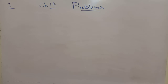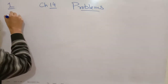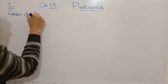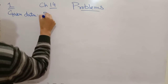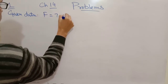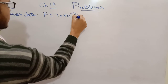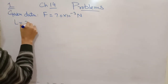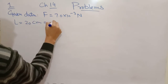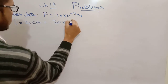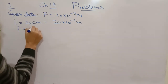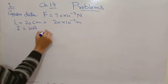We have to find the magnetic field. Given data: Force is 7.0×10⁻³ newtons. Length is 20 cm, which is 20×10⁻² meters. Current is 10 amperes.